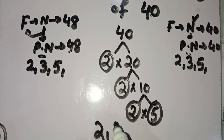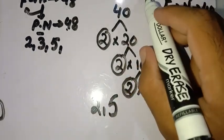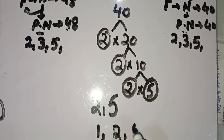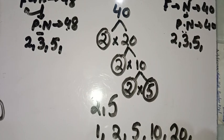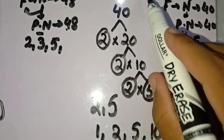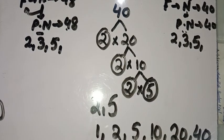Now we are finding all the factors of 40. The factors are: 1, 2, 5, 10, 20, and 40. These are the numbers which divide 40, and 2 and 5 are the prime numbers which divide 40. Thanks for watching this video.